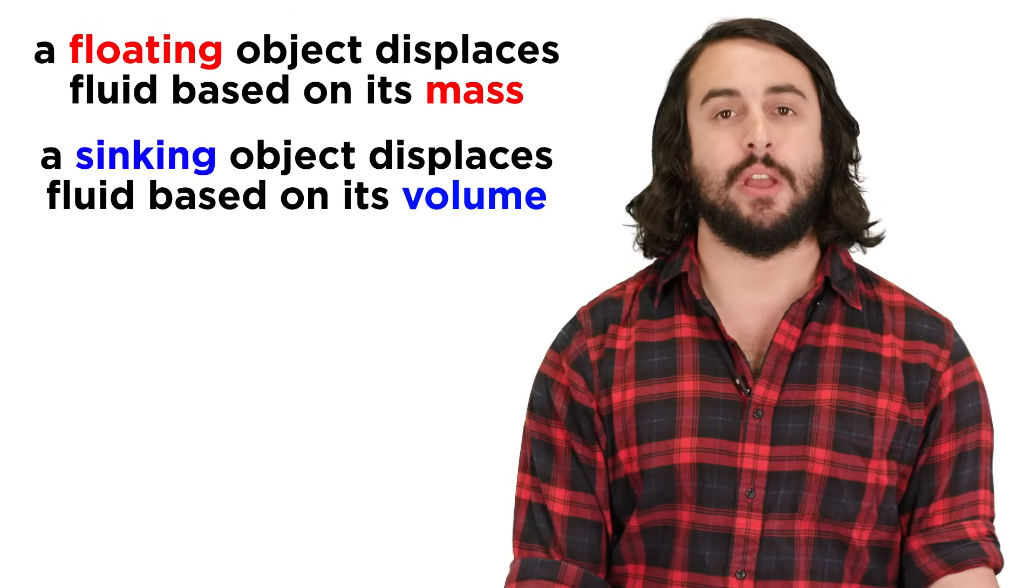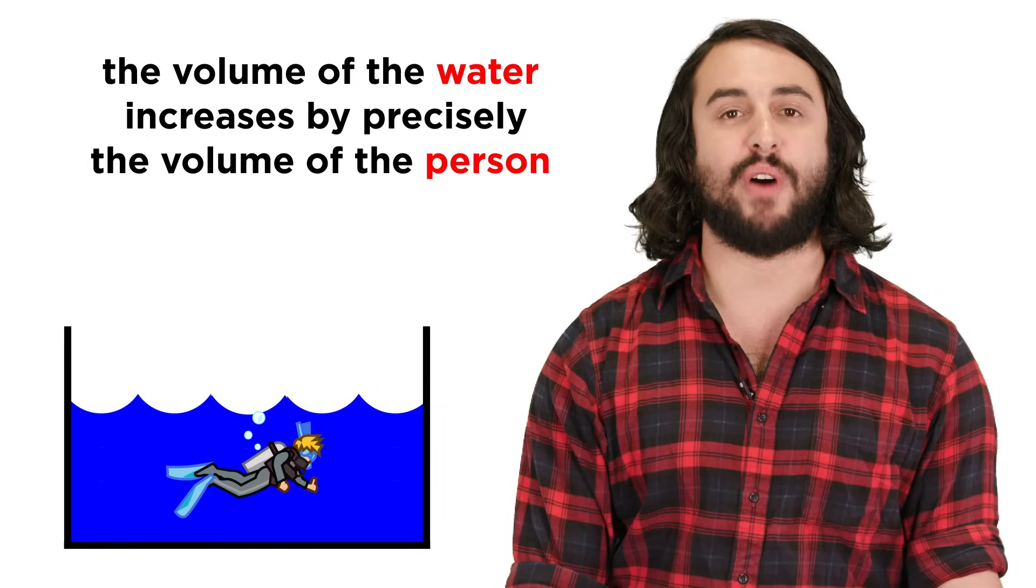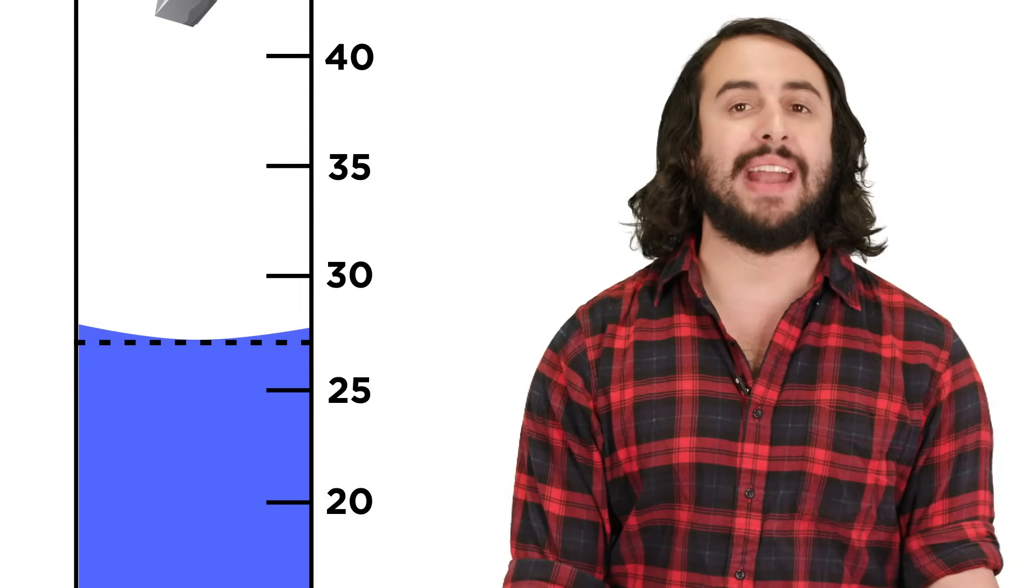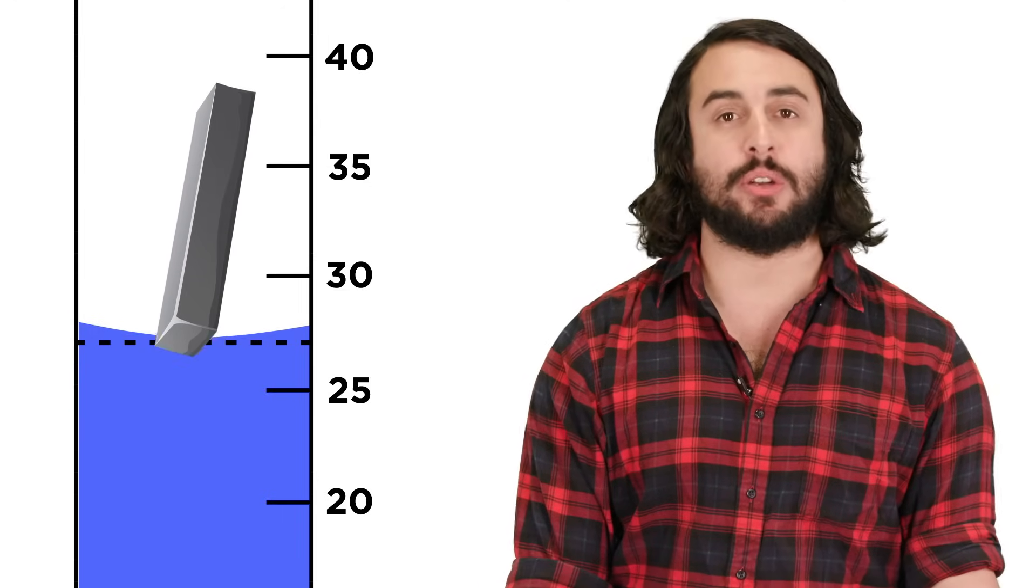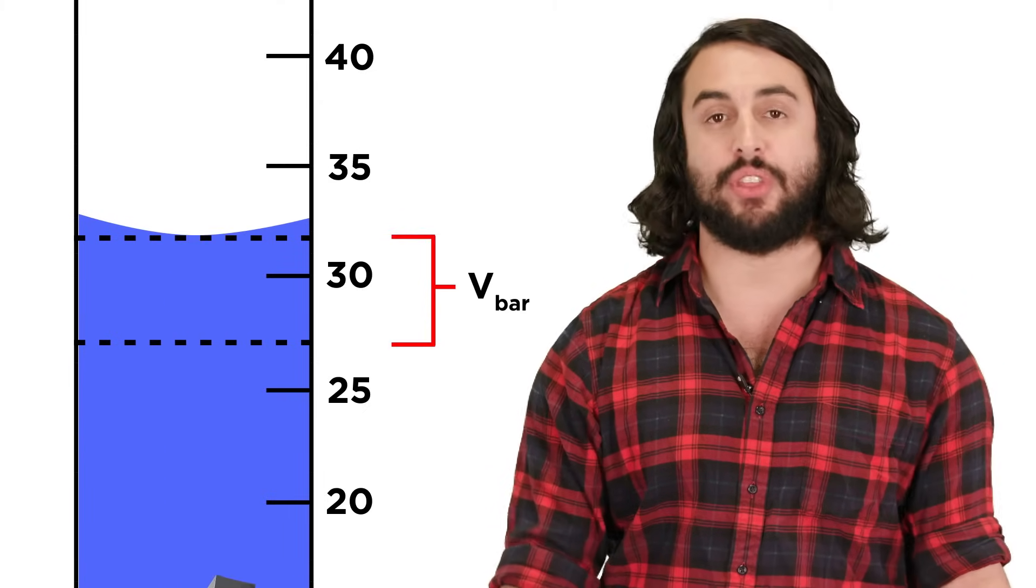So apart from the buoyant force, Archimedes was also the first to understand that when an object, like a person, is submerged in water, the volume of the water displaced must equal the volume of the object submerged, regardless of its shape. Any object with a volume of five milliliters, when fully submerged, will cause the water level to rise in this graduated cylinder to a reading of five milliliters more than before.